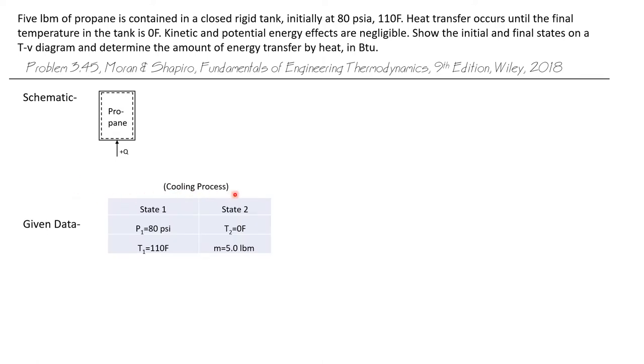We know that the problem describes a cooling process from state one to state two, where state one is given as 80 PSI and 110 degrees Fahrenheit. And state two has a final temperature of zero degrees Fahrenheit and the mass of the system was given as five pounds mass.